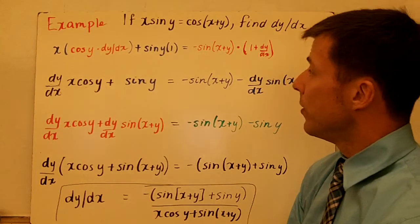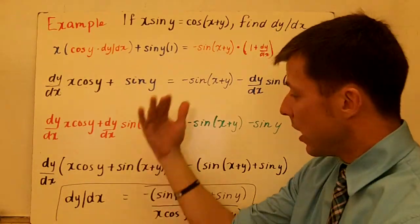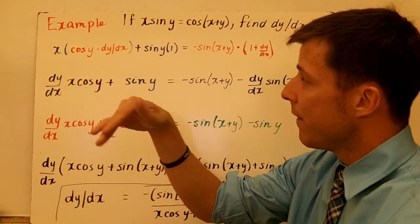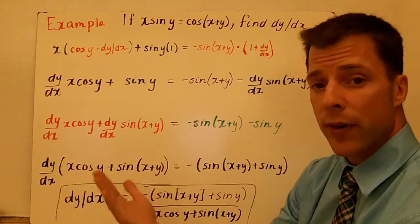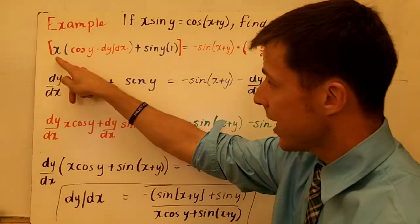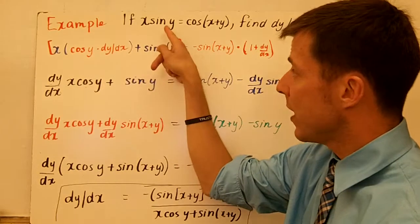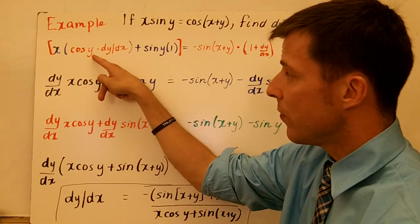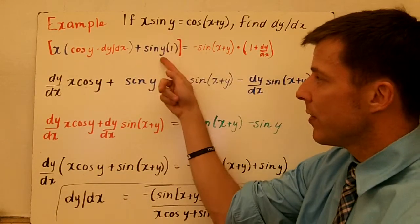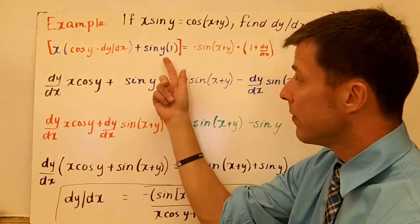This last one is what we call a doozy — I'm combining product rule. x times sine y equals cosine of x plus y; find the derivative. This one has a lot of steps and it can get confusing. We have x sine y, so first times the derivative of the second plus second times the derivative of the first — there is your product rule. So x times the derivative of sine y, which is cosine y, times dy/dx — because we have to take the derivative of that function inside; the derivative of y is just 1, which is multiplied by dy/dx — plus second times derivative of the first. Notice how this second term is not multiplied by dy/dx, because we didn't take the derivative of a y term here.